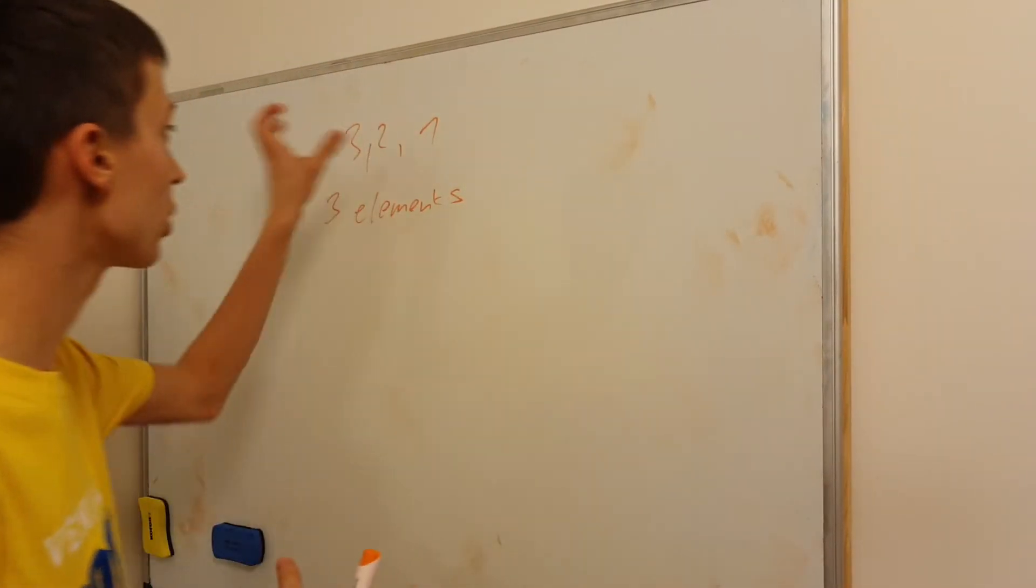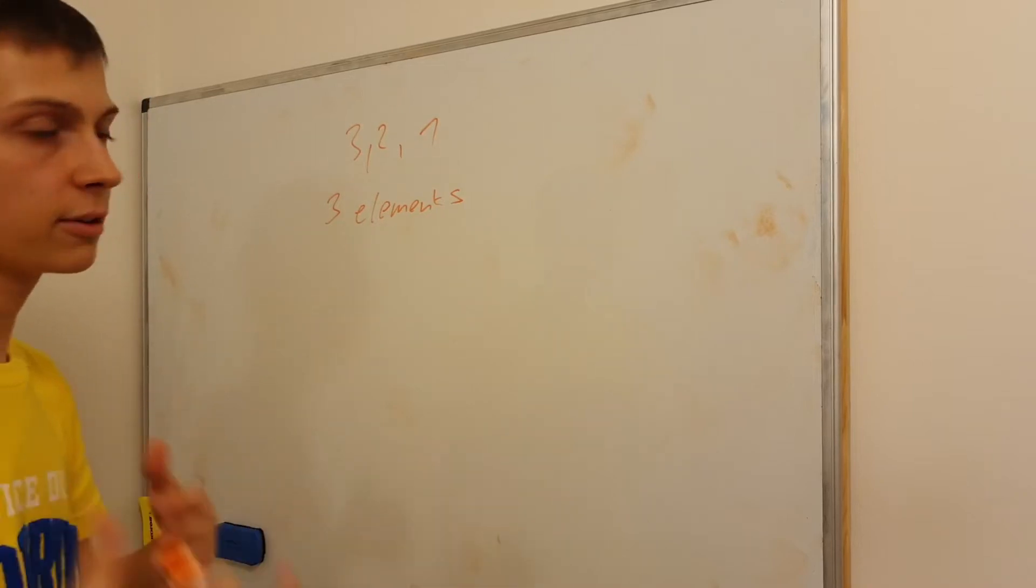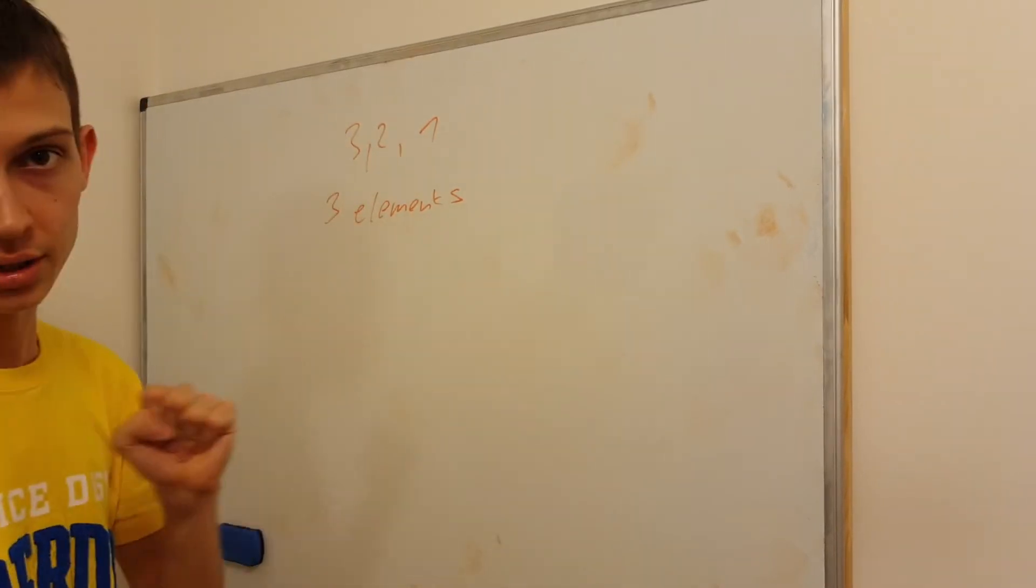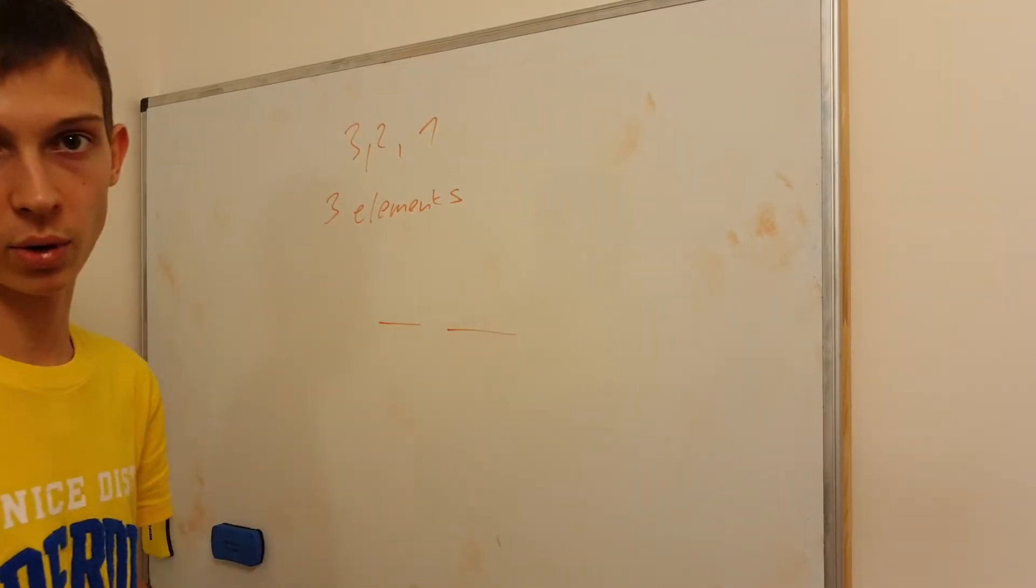Greetings. We have three elements, namely three numbers right here. The question is, how many different numbers we can make out of these three digits: 3, 2, and 1, but we care about the order of them as well.